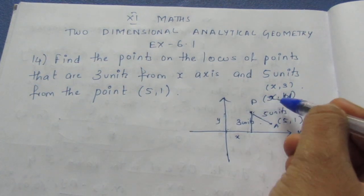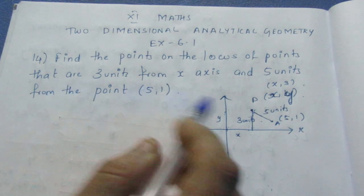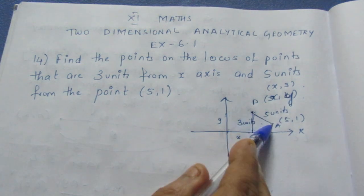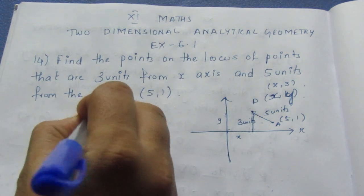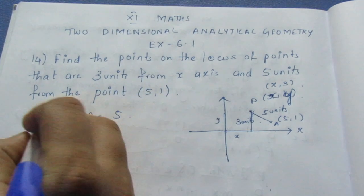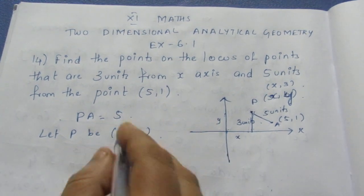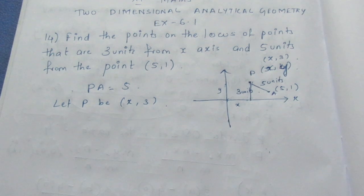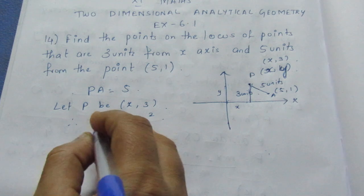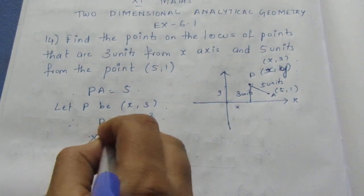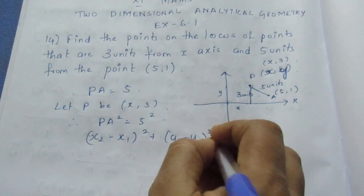Since the y-coordinate is 3, it's 3. So x, 3 is point P. If we look at the distance, we have the distance formula. PA equals 5. Let P be (x, 3). By the distance formula, PA² equals 5² — that is, (x₂−x₁)² + (y₂−y₁)² = 25.